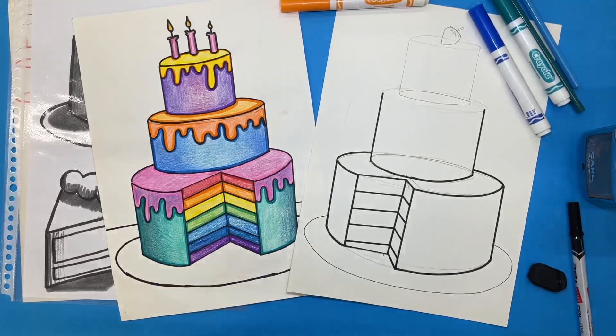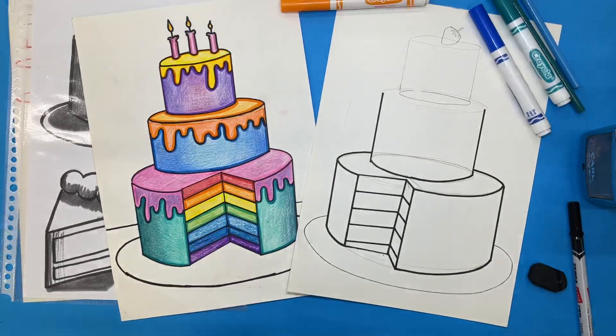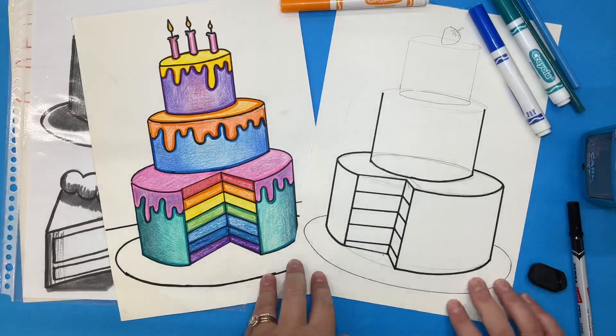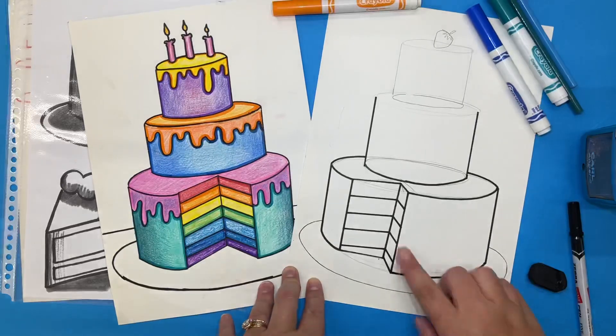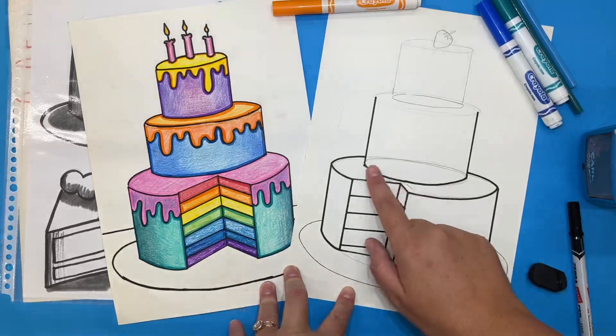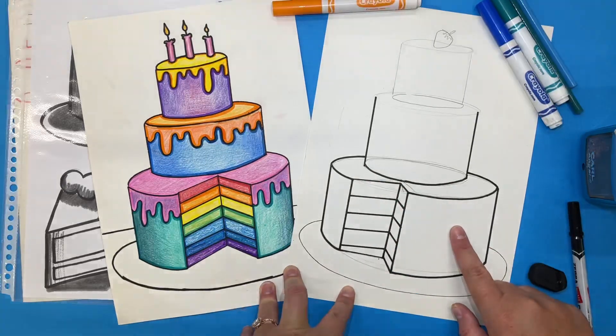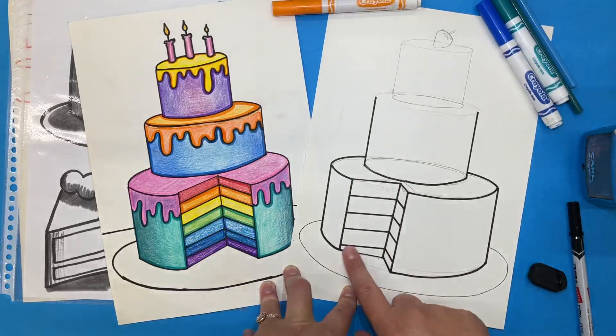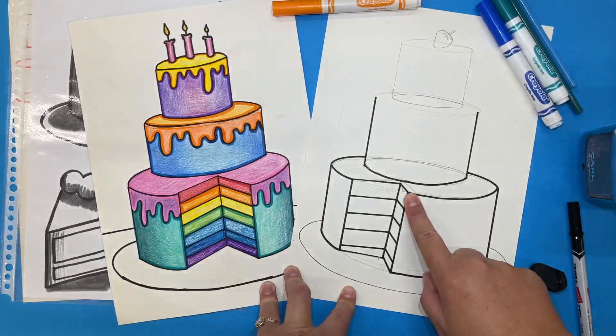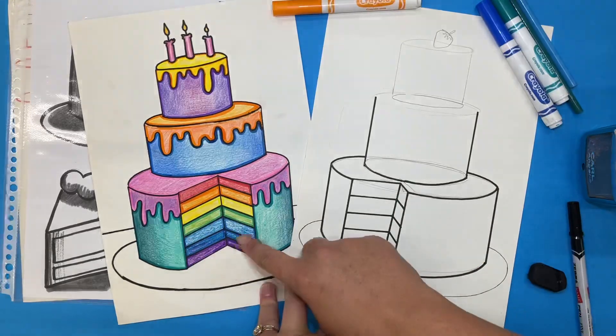Hello my amazing third grade artists. Last class, inspired by the yummy cake art by Wayne Thiebaud, we were working on drawing the three-dimensional form of a cylinder and challenging ourselves to draw in perspective a cut piece of cake.